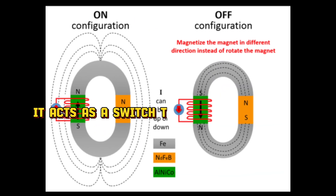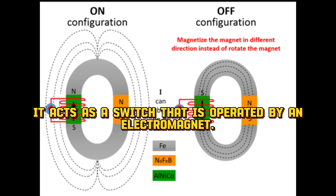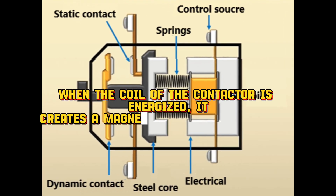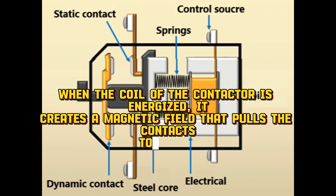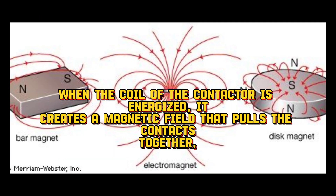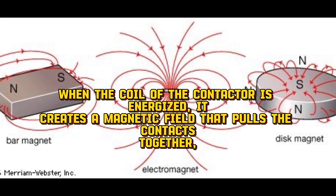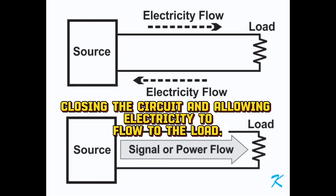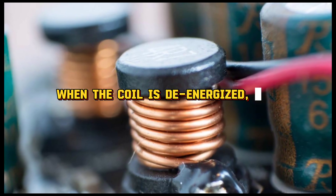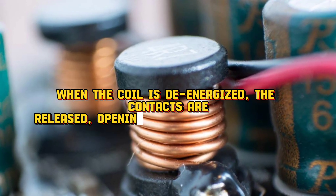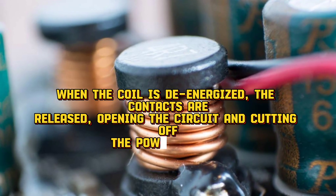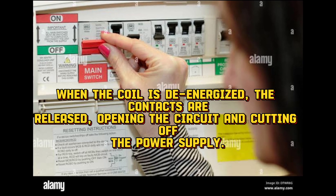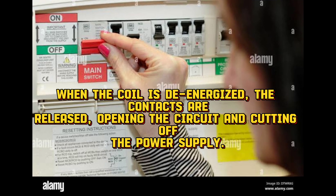It acts as a switch that is operated by an electromagnet. When the coil of the contactor is energized, it creates a magnetic field that pulls the contacts together, closing the circuit and allowing electricity to flow to the load. When the coil is de-energized, the contacts are released, opening the circuit and cutting off the power supply.